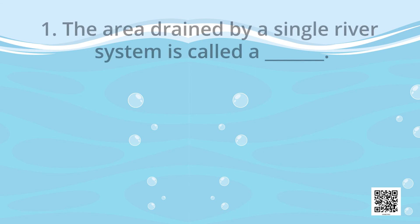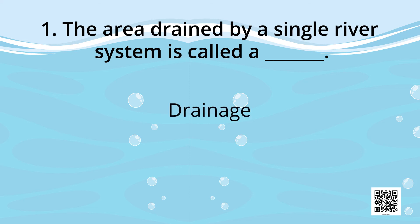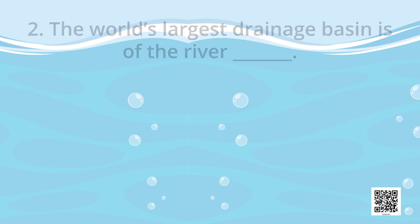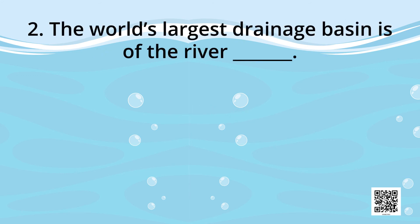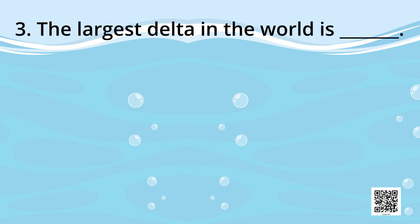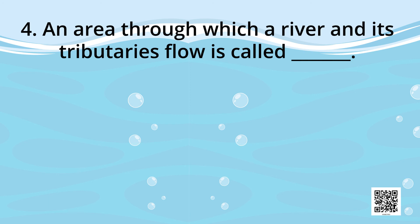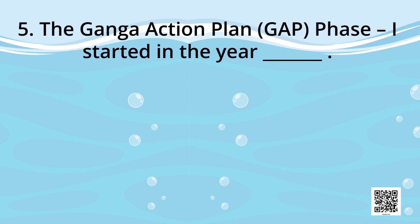Let's review what we have learned. The area drained by a single river system is called a drainage basin. The world's largest drainage basin is that of the Amazon River. The largest delta in the world is the Sundarban Delta. An area through which a river and its tributaries flow is called a basin. The Ganga Action Plan Phase One started in the year 1985.